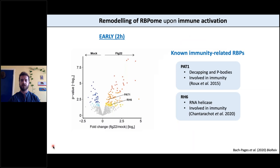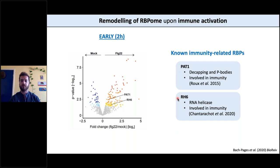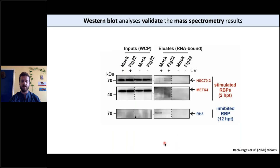We started looking into what these proteins were and found the usual suspects — RNA binding proteins known to be involved in plant immunity. One of them is PAD1, involved in decapping and P-body formation, previously described to be involved in immunity against Pseudomonas syringae. We also found RNA helicase 6, recently described as well to be involved in immunity. That was reassuring that our dataset makes sense. We evaluated those by doing PETRIC followed by western blot, and the proteins selected as stimulated were seen more bound to RNA, whereas the opposite was true for proteins inhibited by flg22.